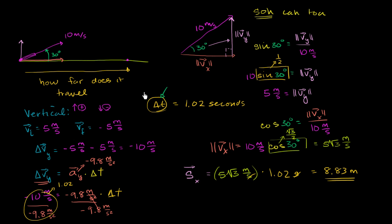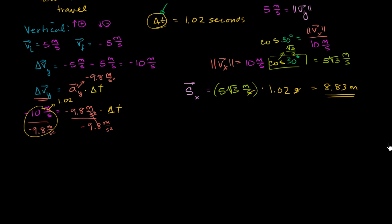In the last video, to figure out how long the object is in the air, we said we're starting and stopping at the same elevation. Whatever our vertical velocity is upward, we'll have the same magnitude of velocity but downward. We used that insight to figure out the change in velocity, and then used that and the constant acceleration due to gravity to find the time in the air. Now we're going to derive a formula — I like to always derive it from scratch.